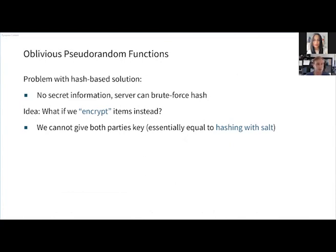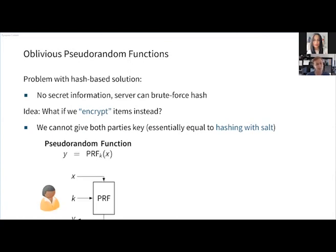Let's have a closer look at oblivious pseudorandom functions. Going back to the hash-based solution, it has one problem: there is no secret information during the computation of the hash, so the server can easily brute force it once received. One idea is to encrypt the items instead of hashing them, but we can't give both parties the encryption key since that's essentially equal to hashing with a shared salt. A pseudorandom function takes a key k and input item x and deterministically produces output y.